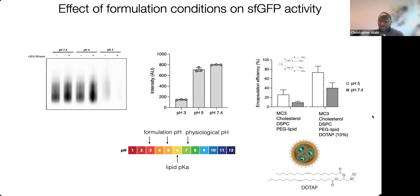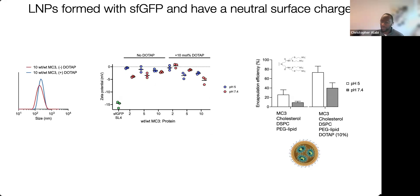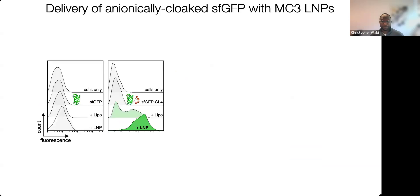Moving on, we sized these particles with or without DOTAP — they're in the 200 to 300 nanometer range. The zeta potential, even with the addition of 10% DOTAP, is essentially near zero. So these are not cationic particles by any stretch of the imagination. Surface potentials are near zero, and we're still able to maintain decent encapsulation efficiencies both at pH 5 and 7.4.